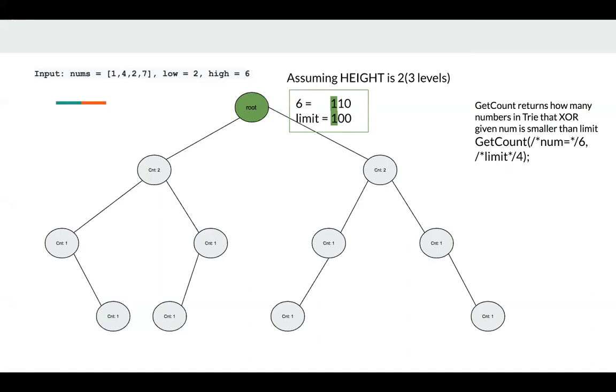At first, we are at node root. 6 is 1,1,0 in binary representation. Limit is 4, which is 1,0,0 in binary representation.